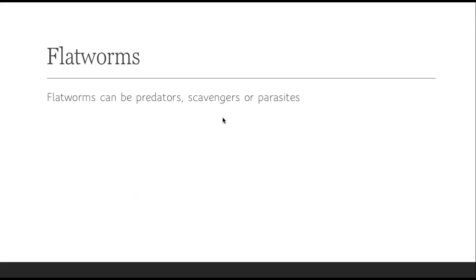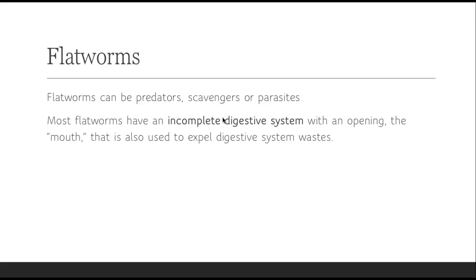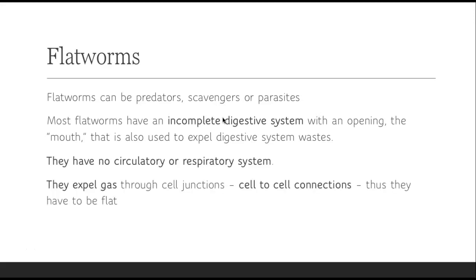Flatworms can be predators, scavengers, or mostly parasites. They mostly have an incomplete digestive system, meaning there's one opening used as both the mouth and the place where you expel digestive waste. They have no circulatory system and no respiratory system — they expel gas through cell junctions, which are just places where two cells connect. Because of that, they are just very, very flat organisms. And they are called monoecious, meaning one organism has both male and female parts — that is, hermaphroditic, having both male and female sex organs on the same organism.